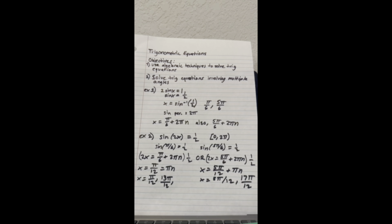After we get our trig function by itself, the next goal is to get x all by itself. We use inverse trig operations — inverse sine cancels with sine, and we get x equals the inverse sine of one half. Looking at the unit circle, remember the sine is the y value, and a y value of one half happens at two places: pi over six and five pi over six. Since sine has a period of two pi and is periodic, the solutions are pi over six plus two pi n, and five pi over six plus two pi n.